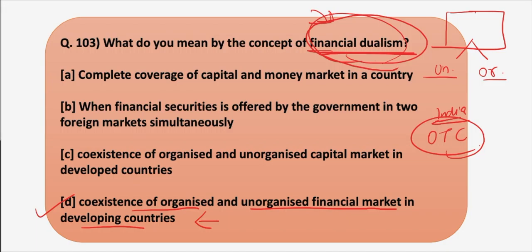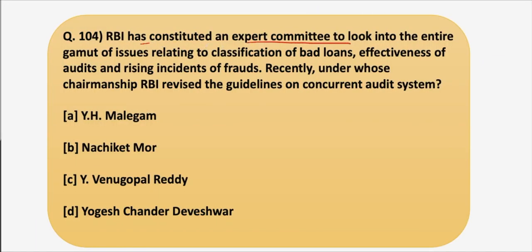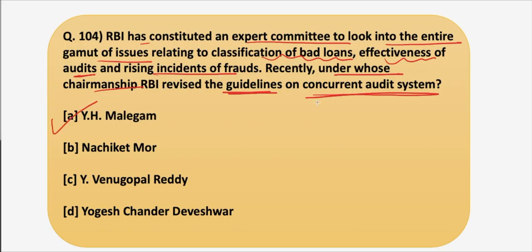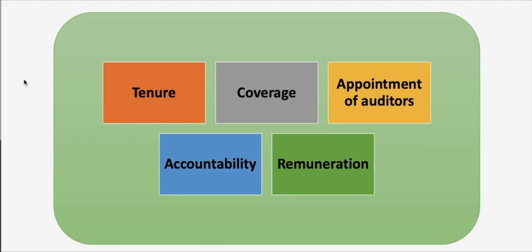Moving to the next question: RBI has constituted an expert committee to look into the entire gamut of issues relating to classification of bad loans, effectiveness of audits, and rising incidence of frauds. Recently, under whose chairmanship did RBI revise the guidelines on the concurrent audit system? The correct answer is YH Malegam. In September 2019, following the recommendations of this expert committee headed by YH Malegam, the Reserve Bank of India revised the guidelines on the concurrent audit system.